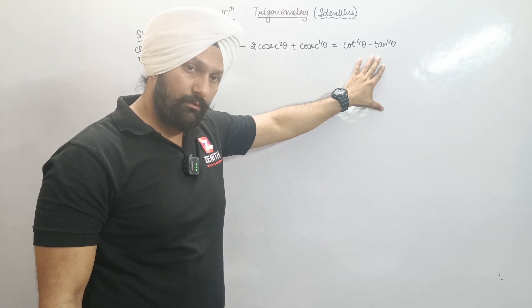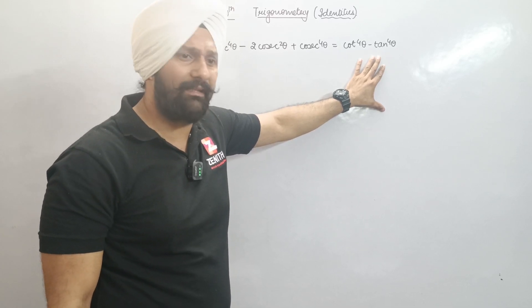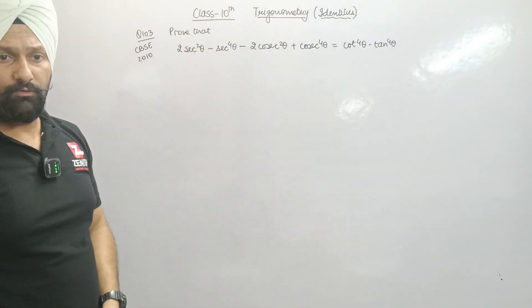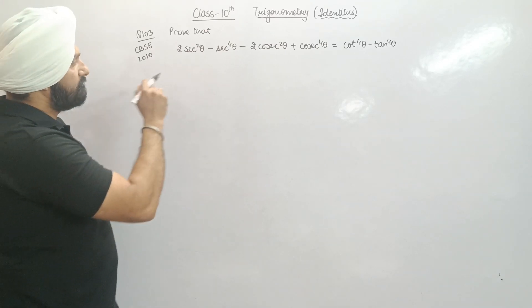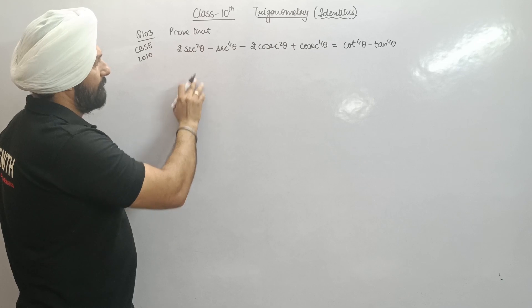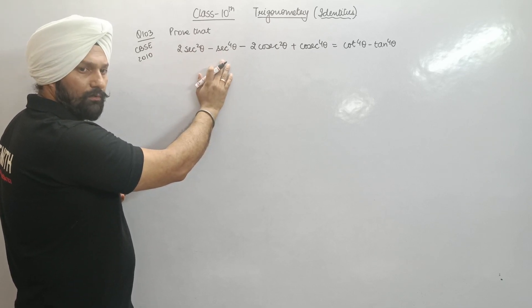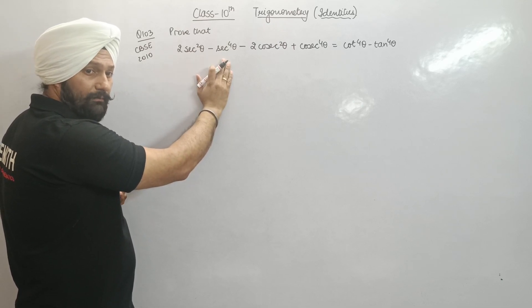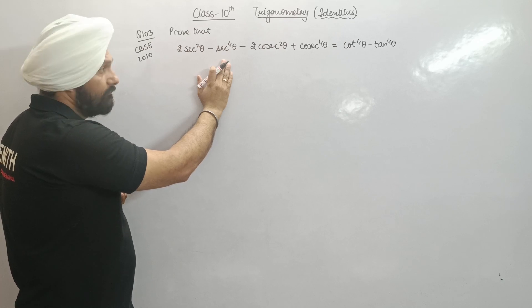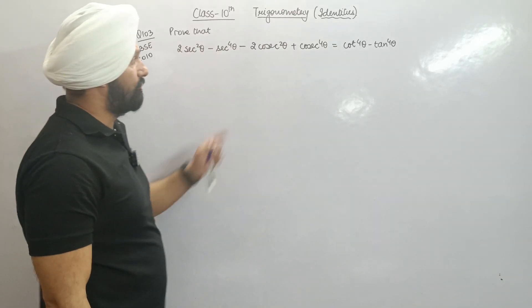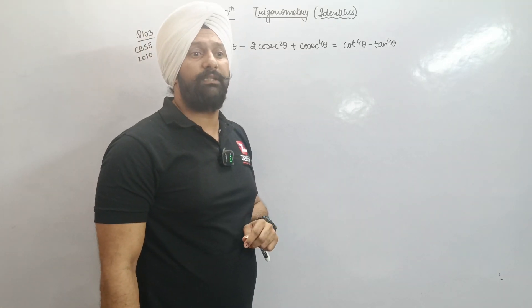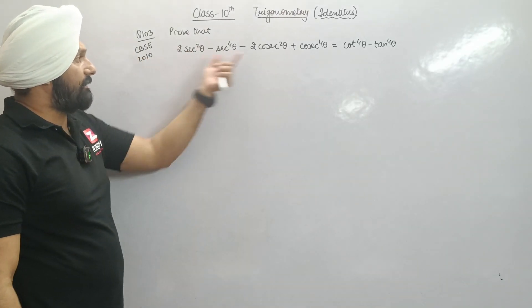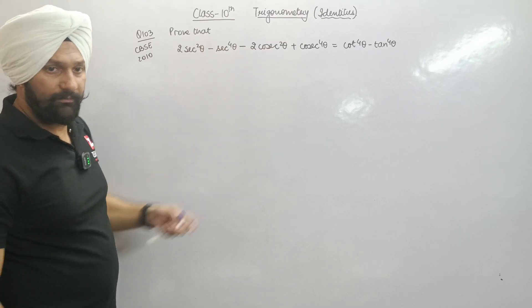We can take this question into sin and cos — that is not wrong — but I feel that if I simplify it a little first, some useful results appear. For instance, if I take sec²θ common, what remains is 2 minus sec²θ. But does that give any benefit? Similarly, taking minus cosec²θ common also gives 2 minus cosec²θ — not much benefit there either.